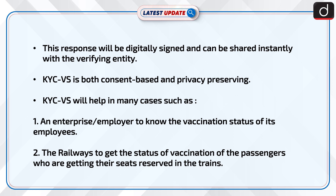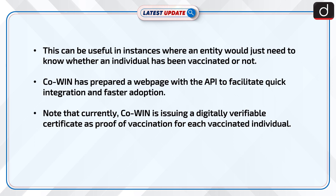KYCVS will help in many cases, such as an enterprise or employer to know the vaccination status of its employees, or the railways to get the vaccination status of passengers who are reserving seats on trains. This can be useful in instances where an entity just needs to know whether an individual has been vaccinated or not.